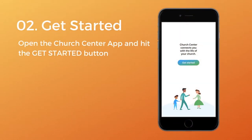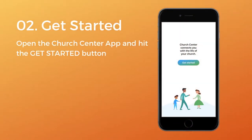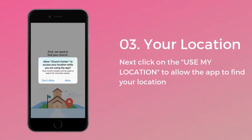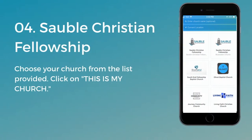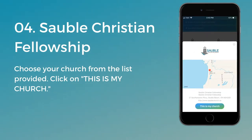Once the app is downloaded, open it up and click the get started button. Next, click the use my location button and allow the app permission to find your location. Once the app has found your location, you will see a list of churches in our area that also use the Church Center app. From that list, choose Sobel Christian Fellowship and then click on the this is my church button.